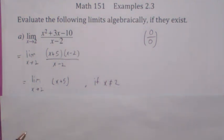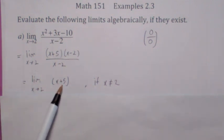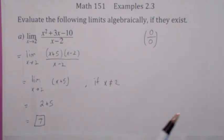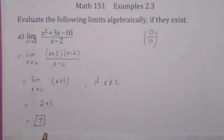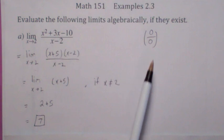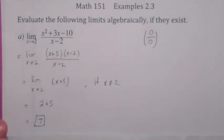We also have a better property called the direct substitution property. Since this is a polynomial, the limit is going to equal the function value. However you get there, the answer is 7. Now notice, even though the form was 0 over 0, the limit turned out to be 7. That's why we call this an indeterminate form — because when it has the form 0 over 0, you don't know what it is. The limit could be anything. In this case, it's 7.